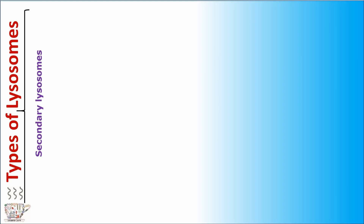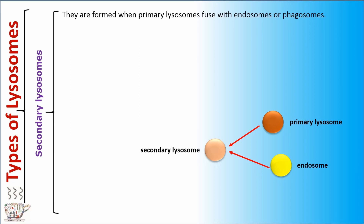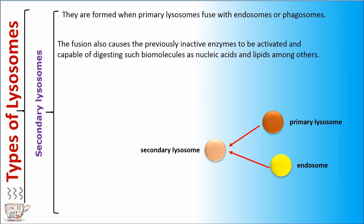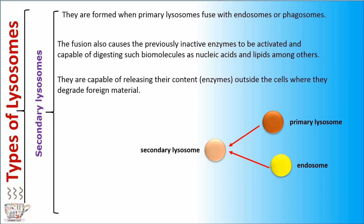Another type of lysosomes is secondary lysosomes. They are formed when primary lysosomes fuse with endosomes or phagosomes. This fusion also causes the previously inactive enzymes to be activated and capable of digesting biomolecules such as nucleic acids and lipids, among others. They are also capable of releasing their contents or enzymes outside the cells, where they digest foreign material.